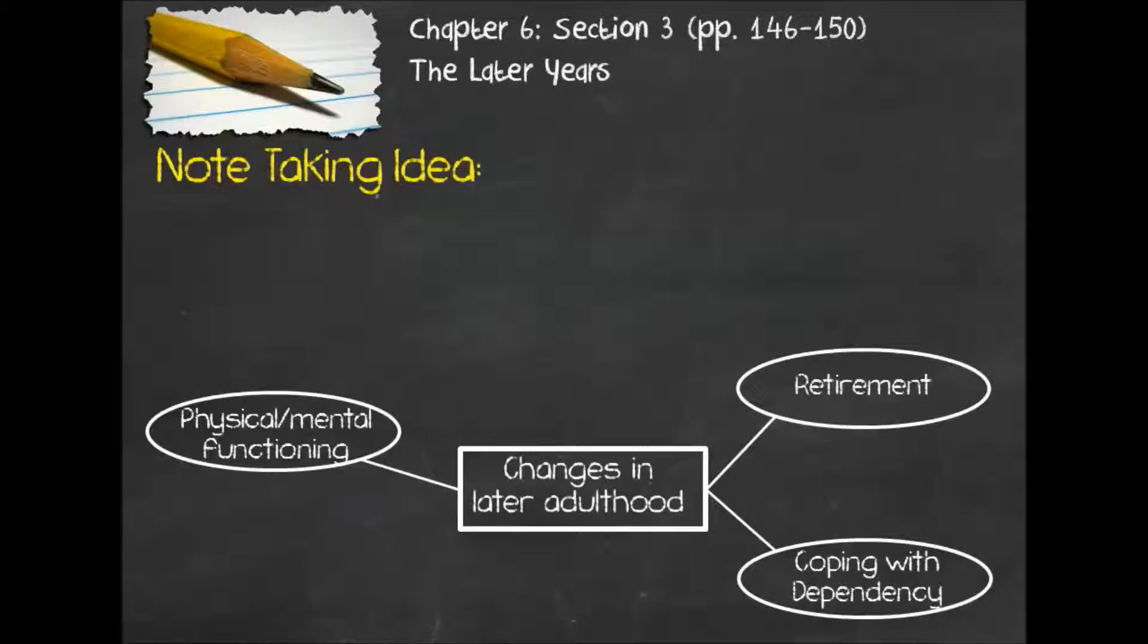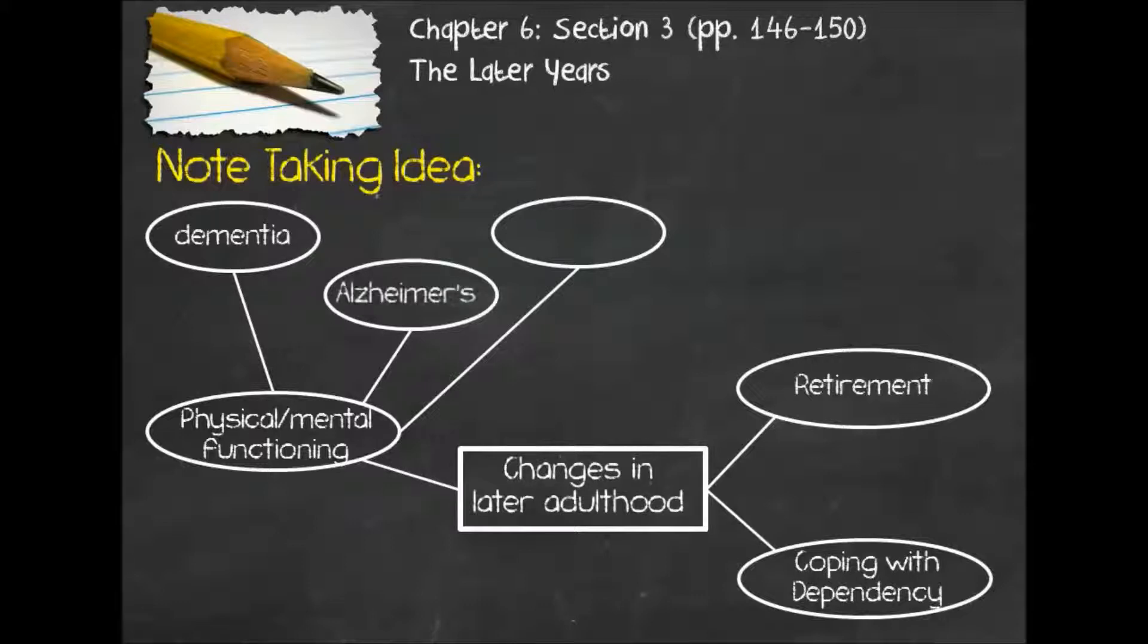For example, under the physical and mental functioning, there are several very important bits of information that are in that section. So what I would do is I would recommend that you would include definitions for dementia, Alzheimer's, and also the physical changes that take place to the body. Now, go through and continue to do this for the rest of this section. And you'll have a good understanding of some of the transitions, some of the challenges, and some of the opportunities that take place in the later years.